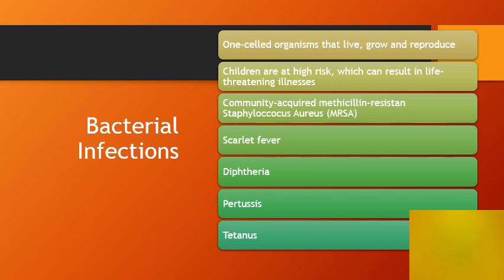Bacterial infections are caused by one-celled organisms that live, grow, and reproduce. Children are at very high risk, but fortunately many bacterial diseases such as diphtheria, pertussis, and tetanus are preventable through immunizations. The bacterial infections we will discuss include scarlet fever, diphtheria, pertussis, and tetanus.